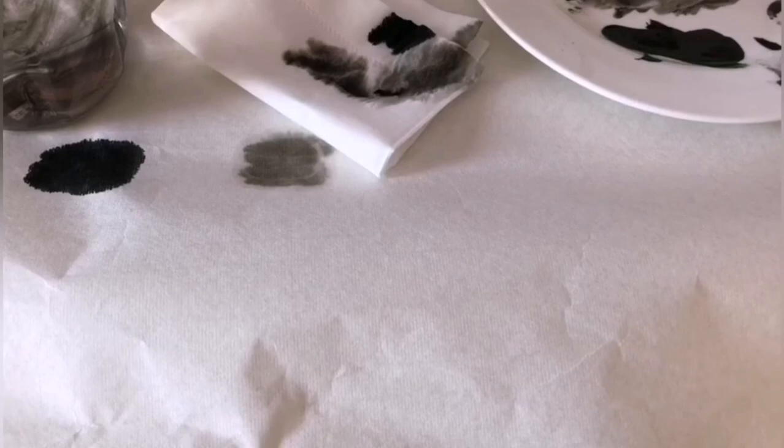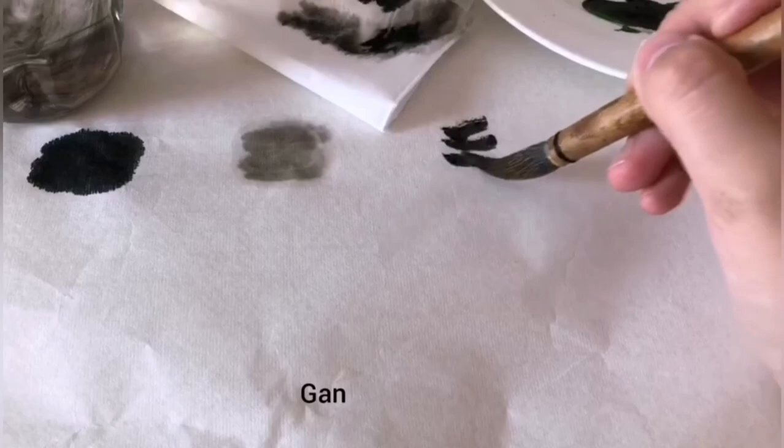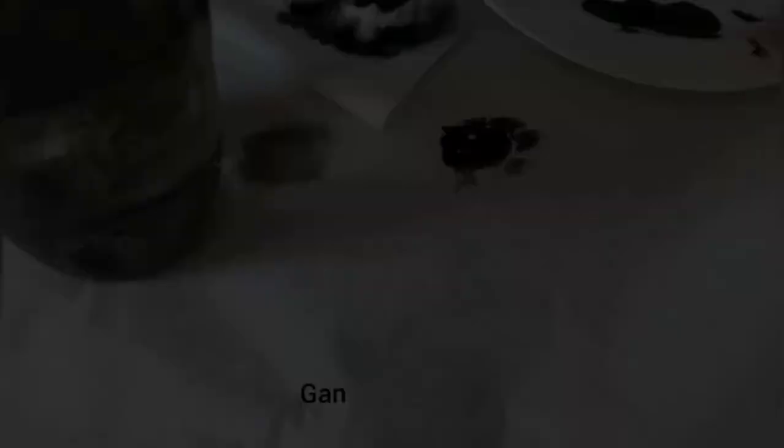Gan and shi describe the dryness of brush strokes and how much water is contained in the brush. Gan means dry. Shi means wet.